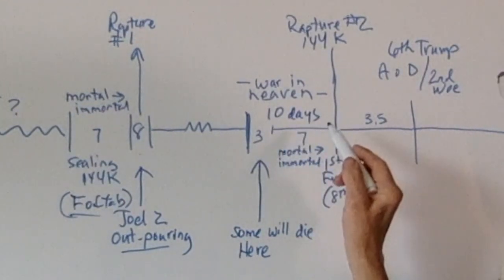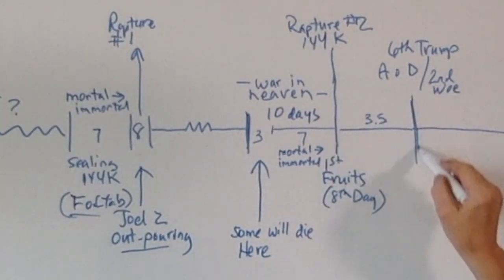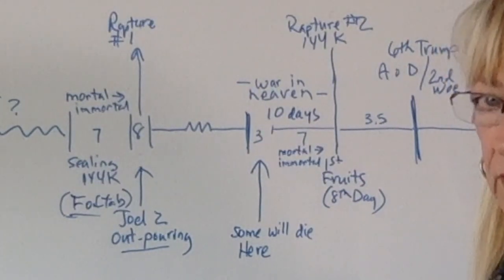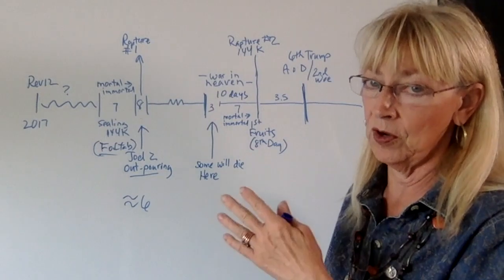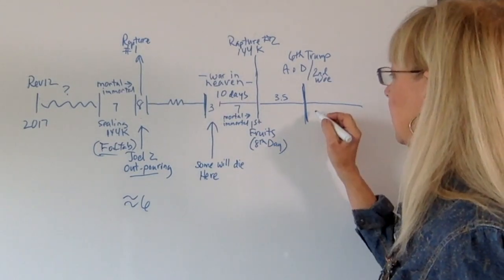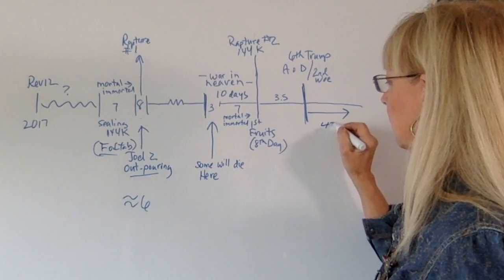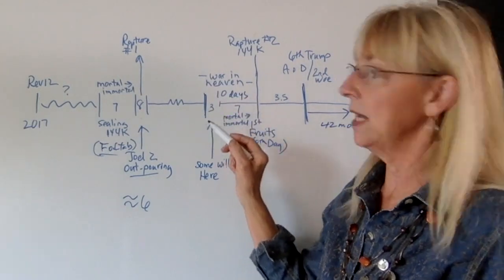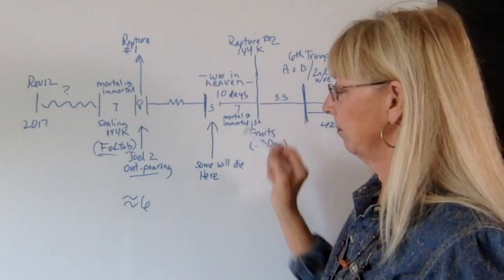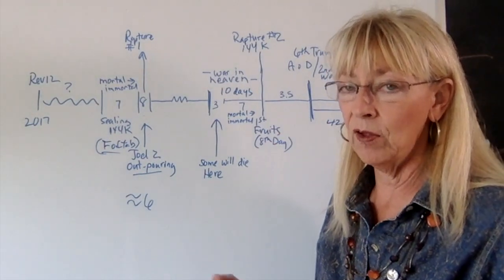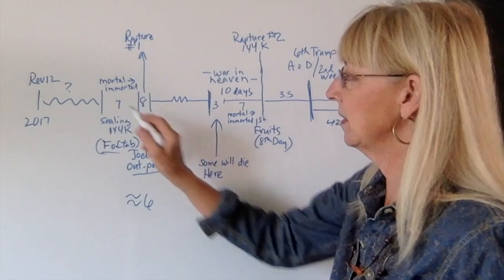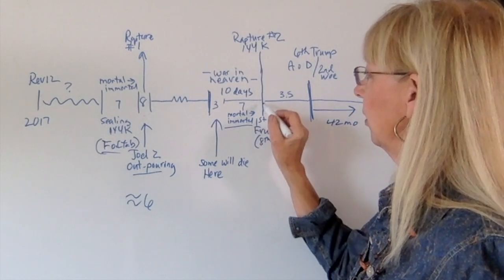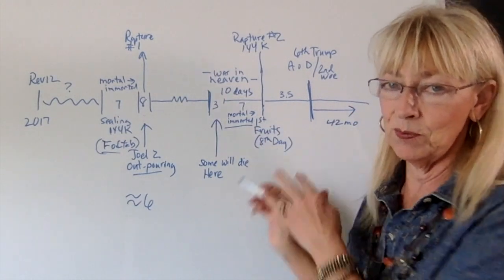Then there are 10 days of persecution — the harlot persecuting believers. After this, the beast begins to persecute Israel and the woman's other offspring, which is the 42-month reign of the beast. The harlot is the one drunk with the blood of the saints during this 10-day window. If the 144,000 are faithful firstborns, they're going to follow the same pattern — seven days with an eighth day, meaning seven days as immortals and taken up on the eighth day, which in this case would be Firstfruits.